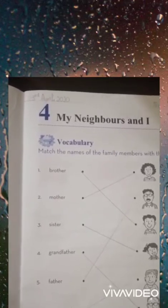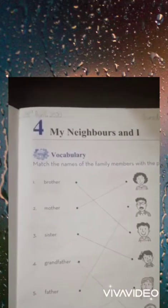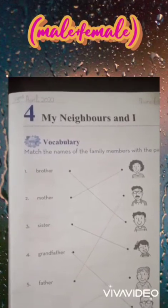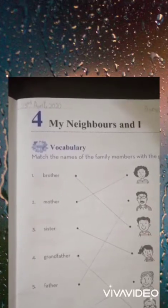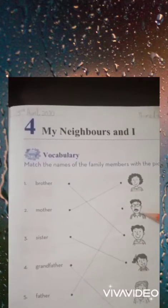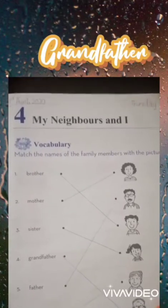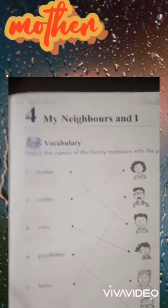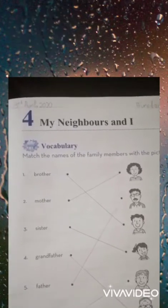A family member can be male or female. Who are the male and female members of your family? Suppose you live with your mother, father, brother, sister, grandfather, and grandmother. Your father, brother, and grandfather are the male family members. Your grandmother, mother, and sister are the female family members. Now we are going to do the activity, number one.